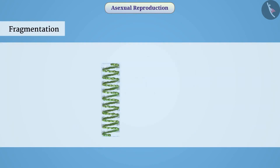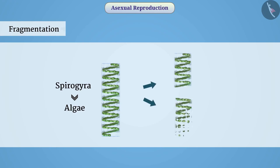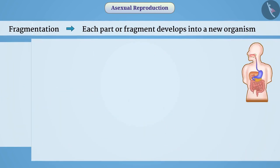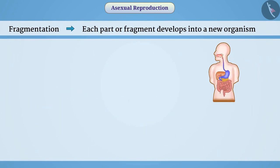Fragmentation: Some multicellular organisms such as Spirogyra, which is an algae, have a simple body structure. Generally, such organisms are just a group of different cells. When they are fully grown, they break into small pieces. Each part or fragment develops into a new organism. This method of reproduction is called fragmentation.